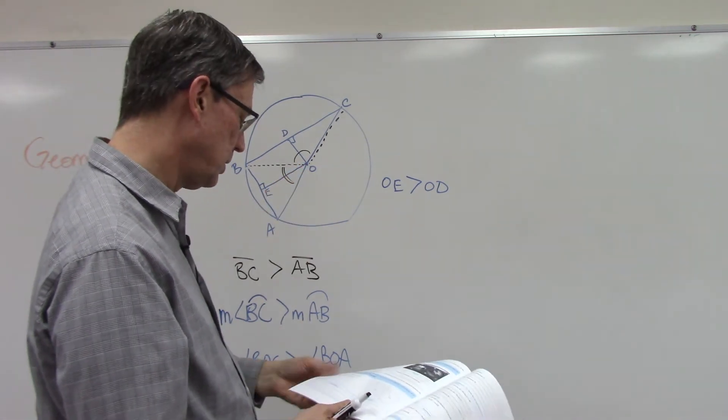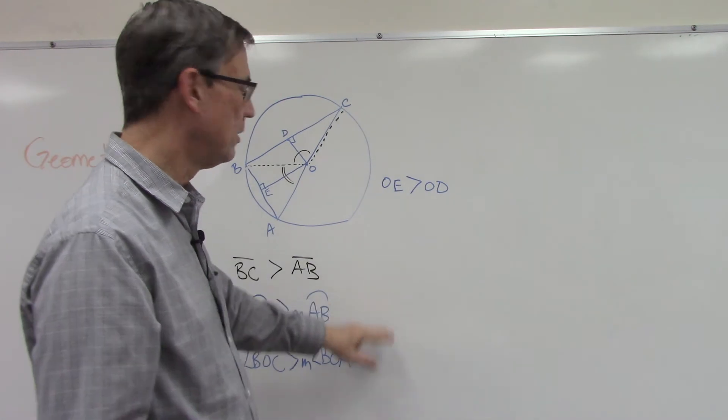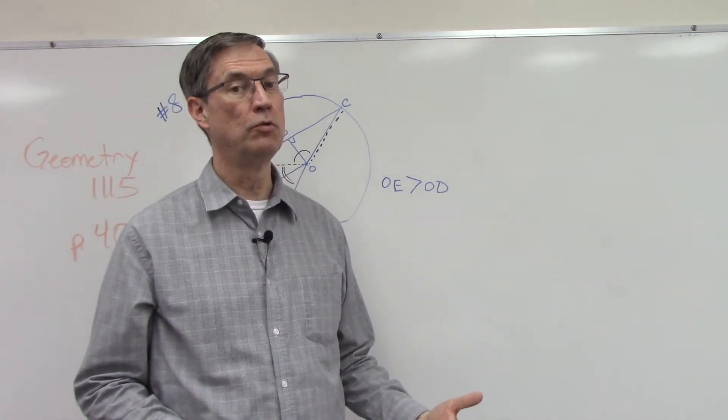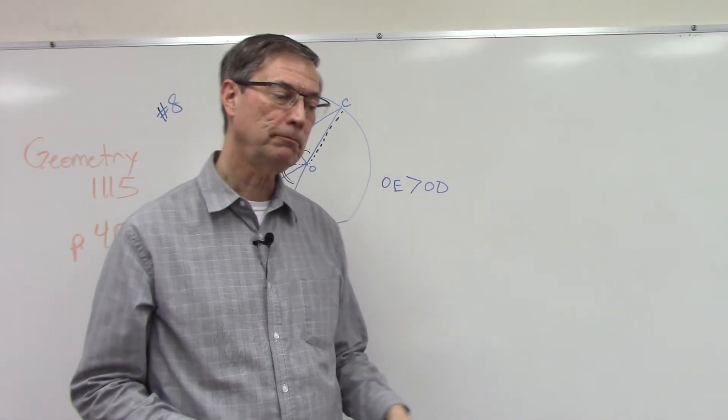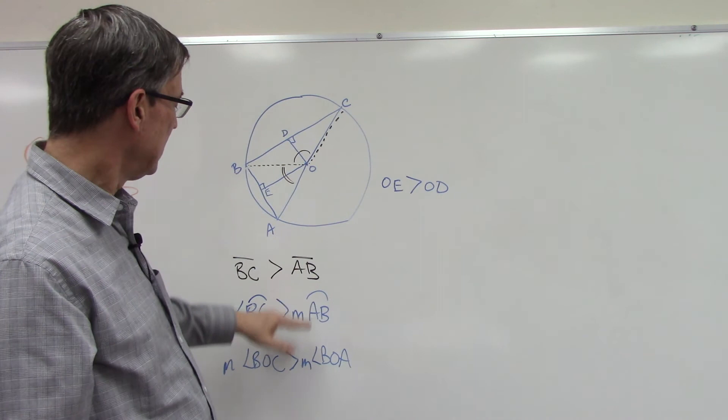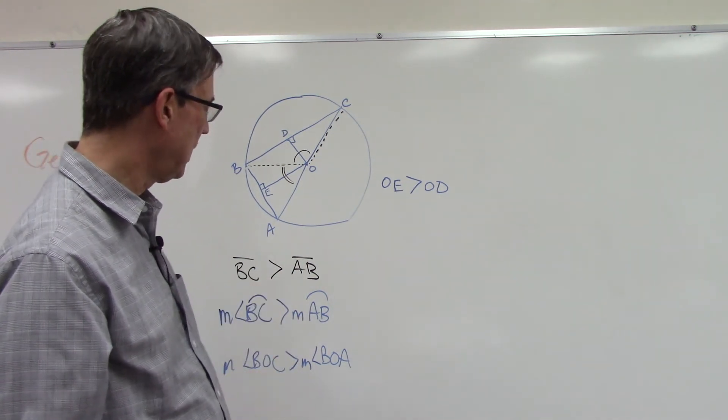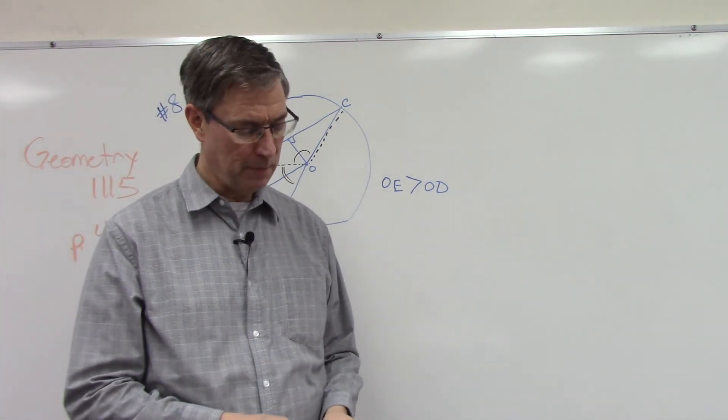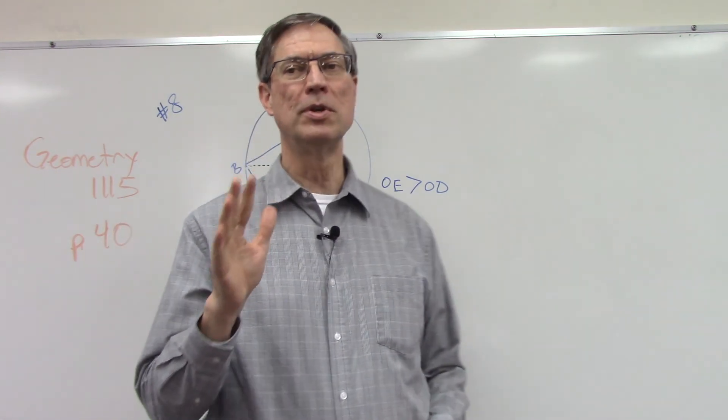Theorem 78: if two arcs are not congruent, then the larger arc is intercepted by the larger central angle. So these two angles we have defined are central angles, and we can use Theorem 78 to make our conclusion.